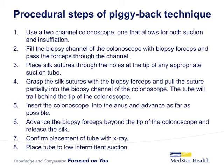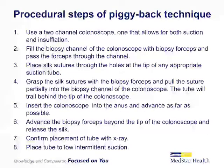In cases where fluoroscopy is not available, Stevenson et al. have described the piggyback technique. Procedural steps are: first, use a two-channel colonoscope that allows for both suction and insufflation. Number two, fill the biopsy channel of the colonoscope with biopsy forceps and pass the forceps through the channel. Number three, place silk sutures through the holes at the tip of any appropriate suction tube. Number four, grasp the silk sutures with the biopsy forceps and pull the suture partially into the biopsy channel; the tube will trail behind the tip of the colonoscope. Number five, insert the colonoscope into the anus and advance as far as possible. Number six, advance the biopsy forceps beyond the tip of the colonoscope and release the silk. Number seven, confirm placement of the tube with x-ray. And finally, place the tube to low intermittent suction.